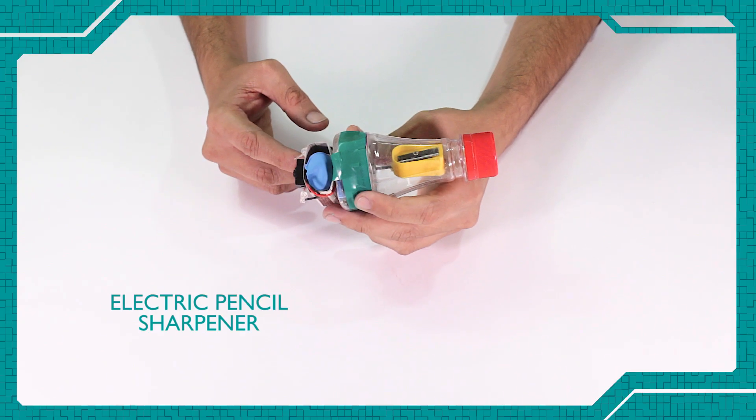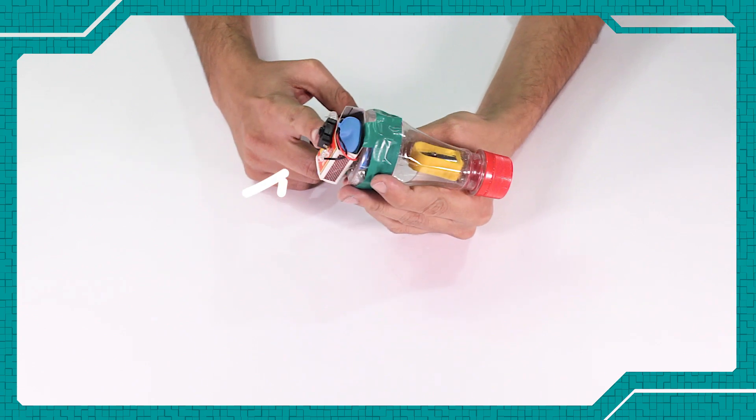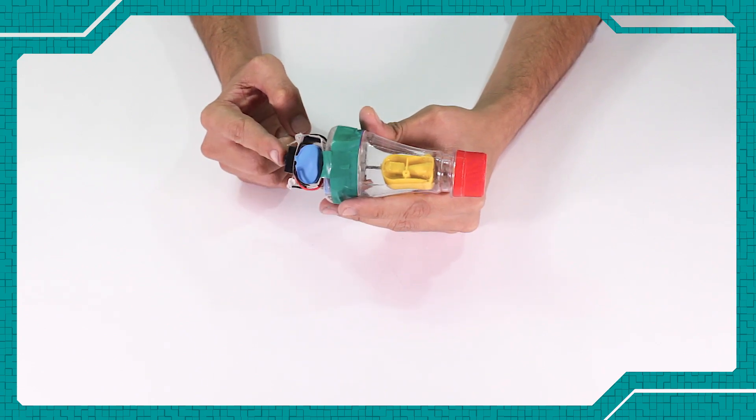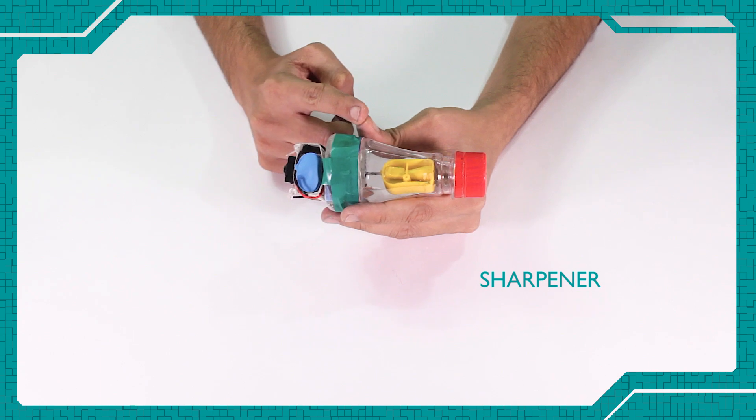The electric pencil sharpener has a simple circuit attached to a button. Pressing the button completes the circuit and allows the motor attached to the sharpener to begin moving.